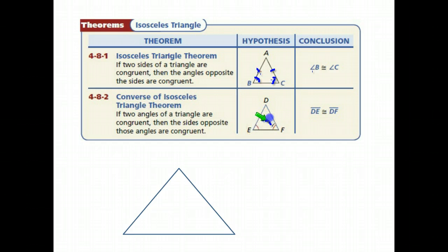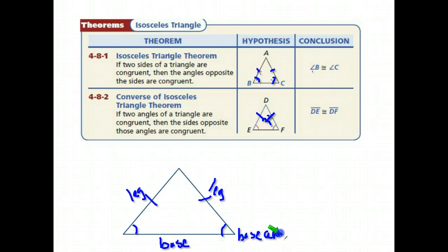I also want to review the parts of an isosceles triangle. You have your congruent sides—those are called legs. The non-congruent side down here is called the base. The congruent pair of angles are the base angles, since they're at each end of the base.